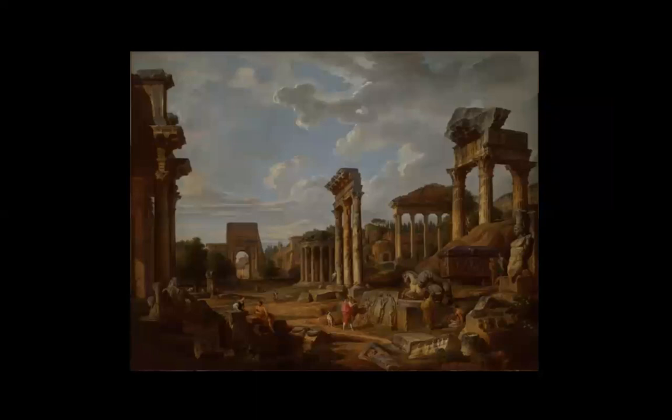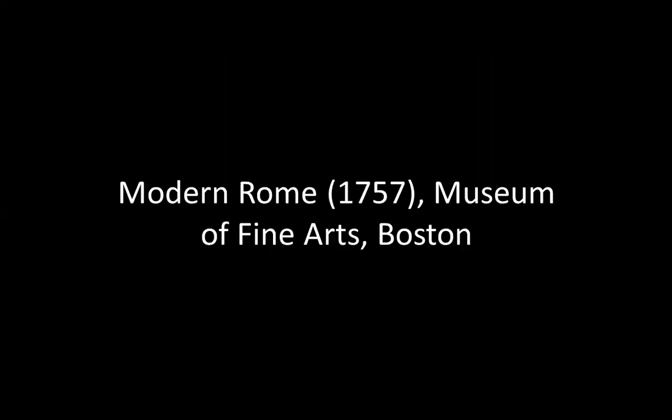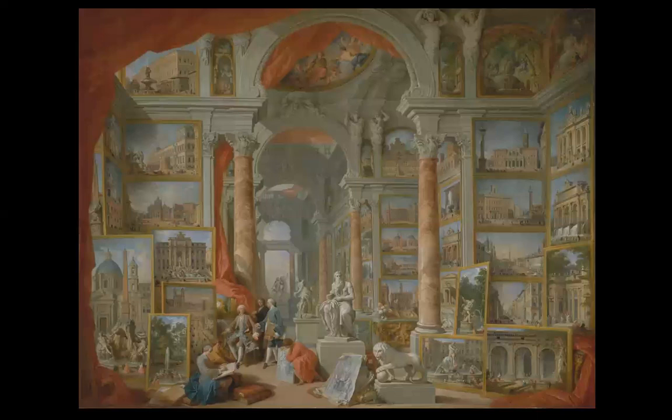What's refreshing in these pictures is there are no cars. Ancient Rome, 1757 — another variation on that theme we already saw being addressed. Modern Rome — but modern from the 18th century.